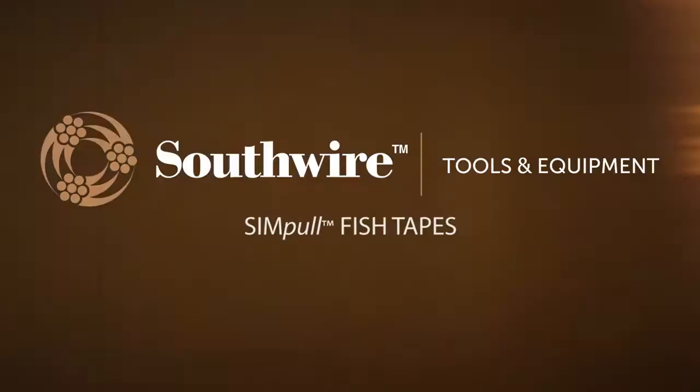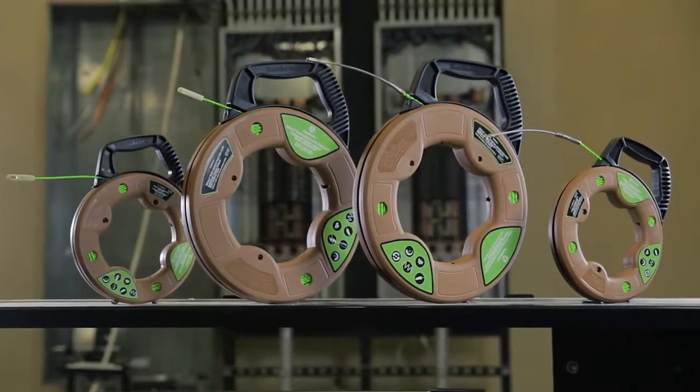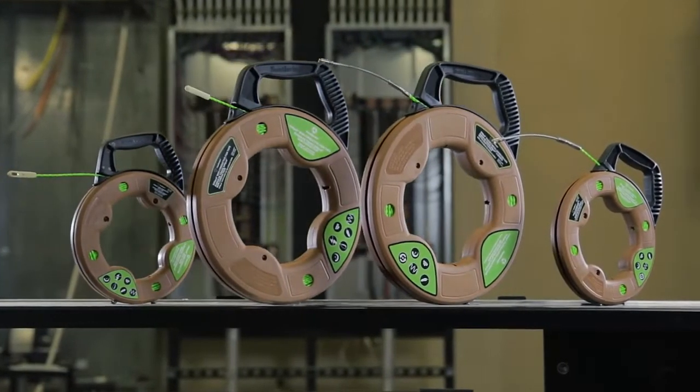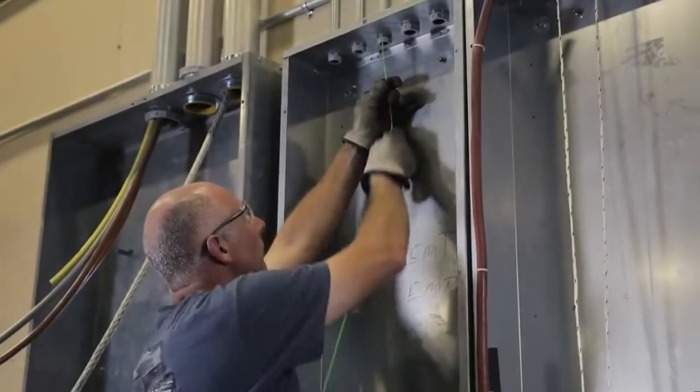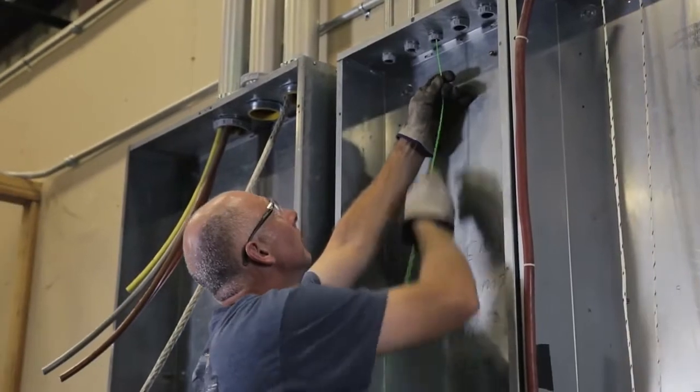The Southwire Simple Fish Tape provides a faster, easier way to push and pull fish tapes through EMT and PVC conduit. The low-friction, spiral-extruded polymer allows the tape to easily glide through conduit without binding at turns, joints, or couplings.